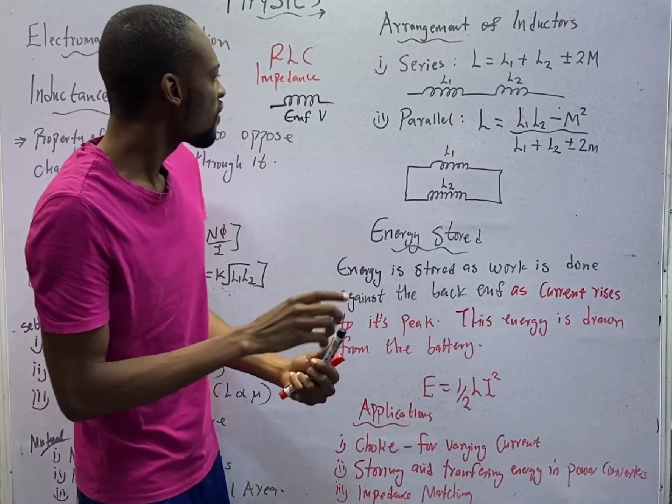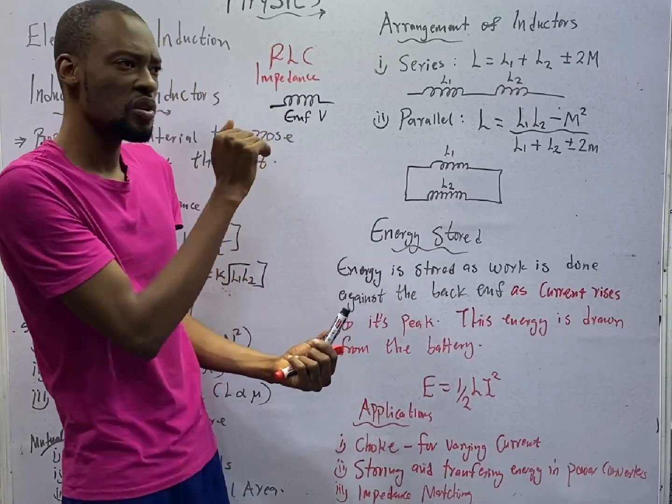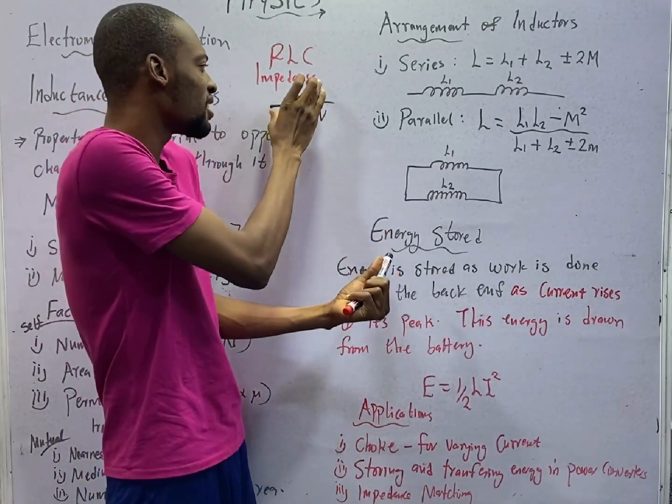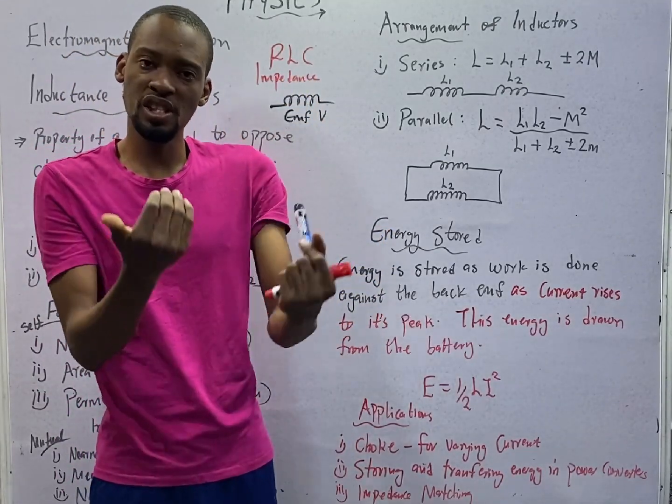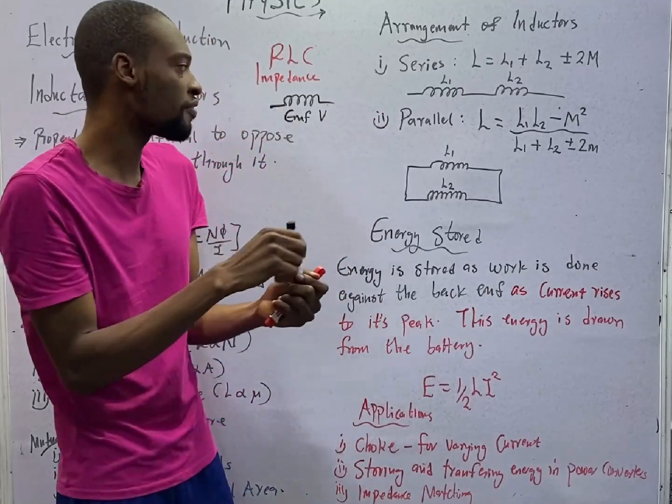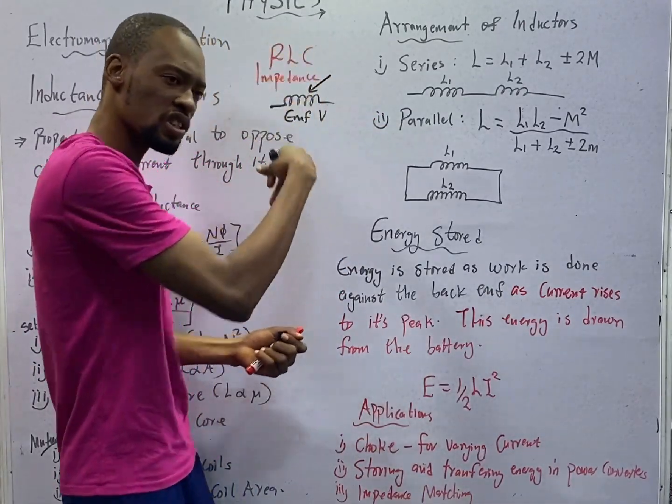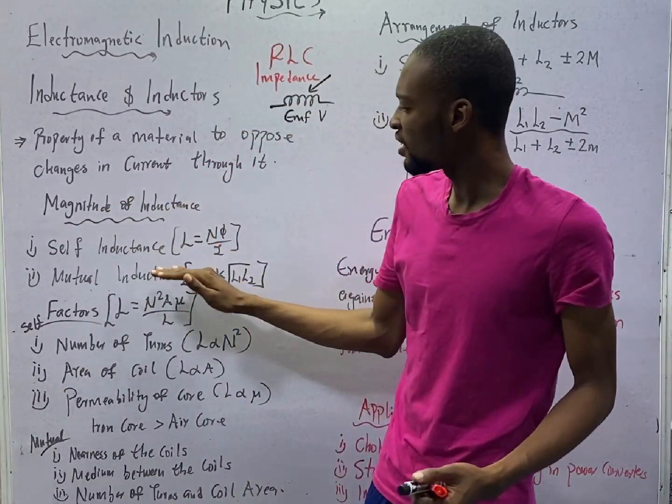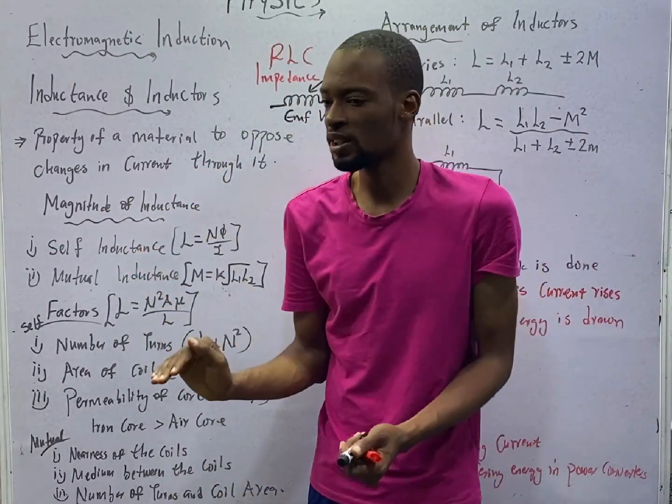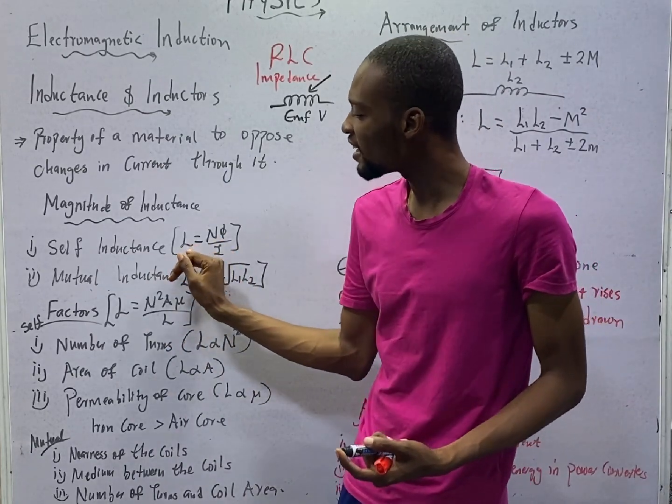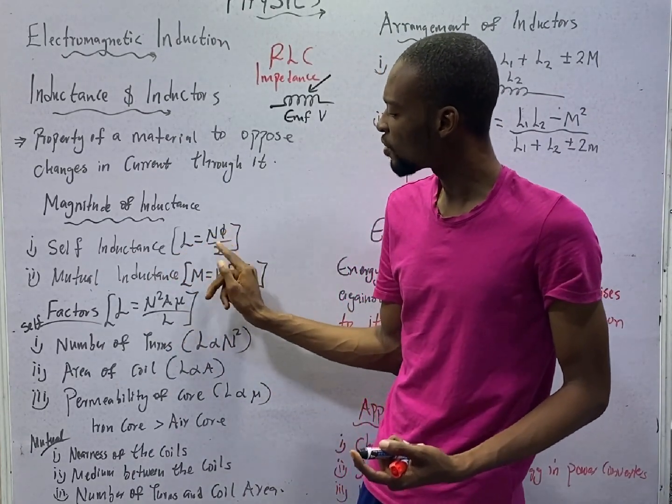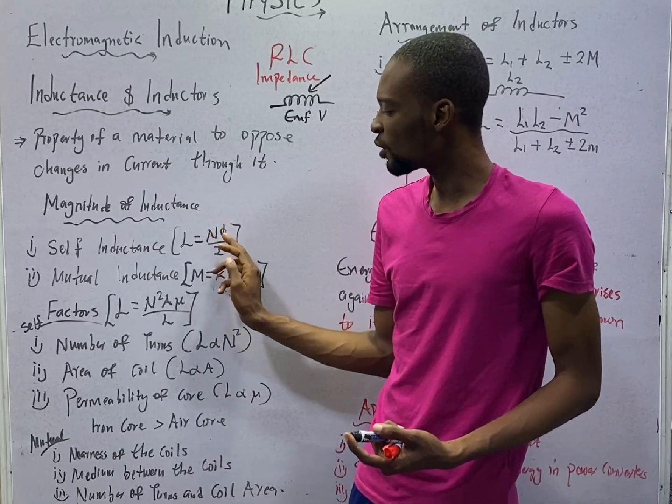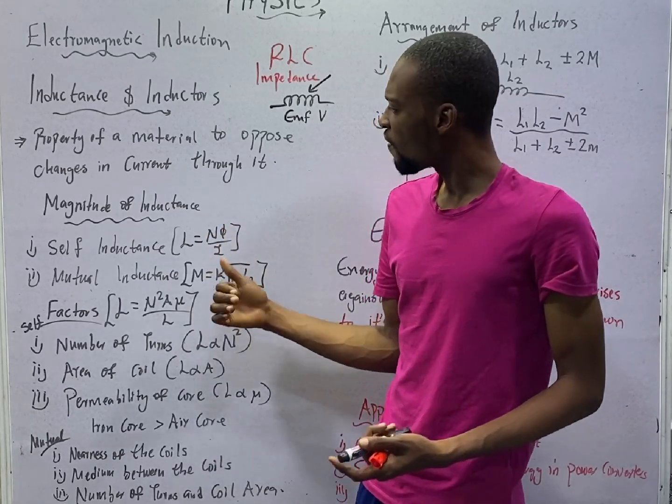If the rate of change of current in this coil produces voltage or EMF in this same coil, we say that that is self-inductance. And the formula for self-inductance is L is equal to N phi over I, N flux linkage over current.